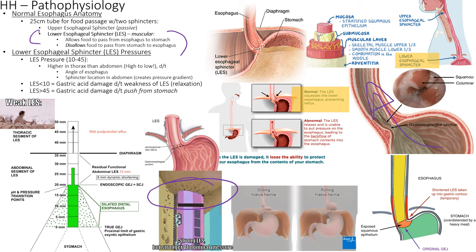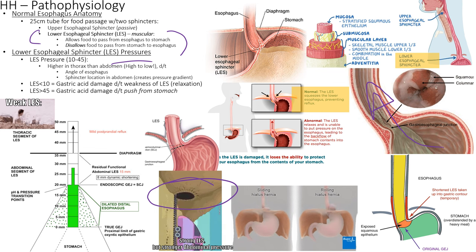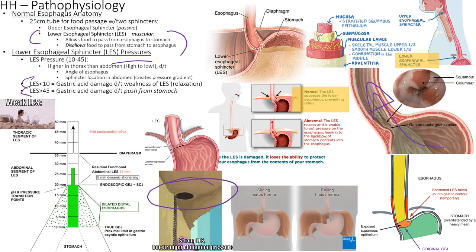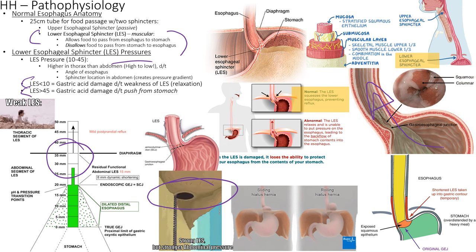The LES tone can be measured using manometry — a tube placed down the esophagus measures pressures and pH. A weak LES has pressure less than 10 mmHg; greater than 45 mmHg is also abnormal. You can also do a 24-hour ambulatory test detecting pressure and pH changes throughout the esophagus and stomach. If pH is detected above the sphincter, acid is making its way up.